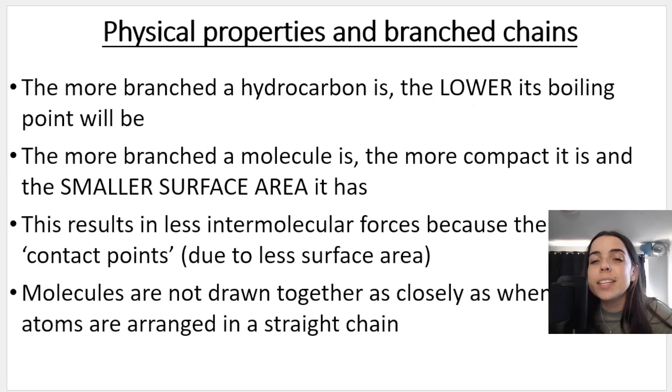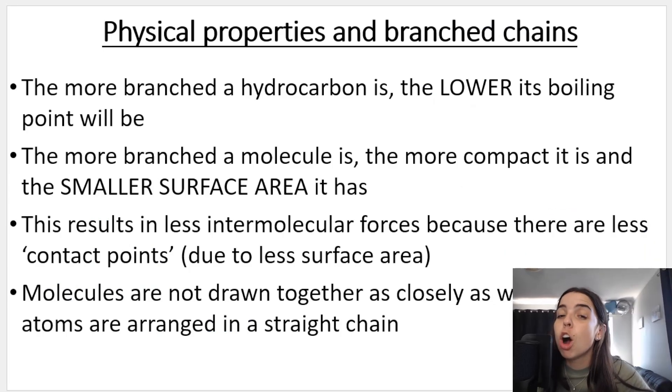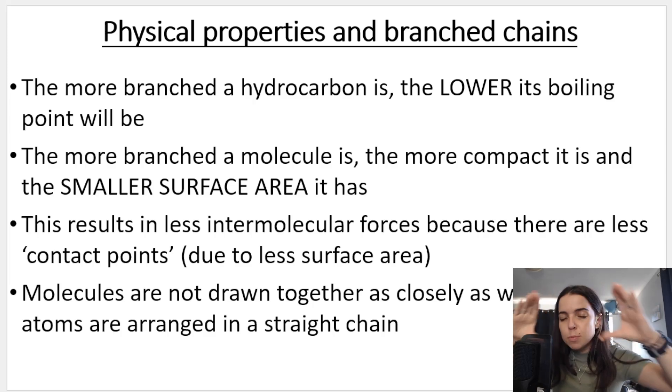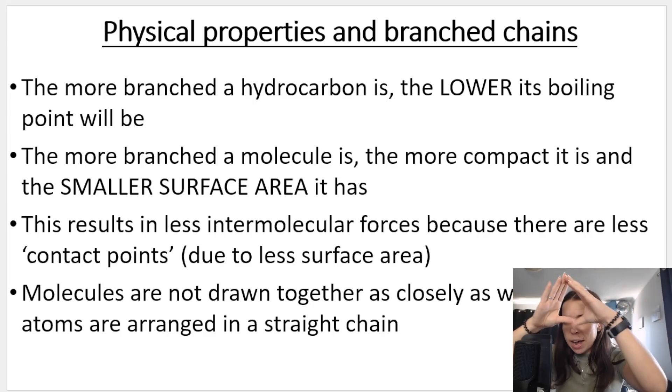So what actually happens is the more branched a hydrocarbon is, the lower its boiling point. The reason is because if it has more branches, it's more compact, it's more spherical, it has a smaller surface area. This means that there will be less intermolecular forces because there are less contact points.